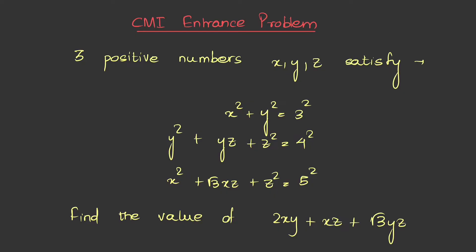This is the 2019 CMI entrance problem. We are given three positive numbers X, Y, and Z satisfying: X squared plus Y squared equals 3 squared; Y squared plus YZ plus Z squared equals 4 squared; and X squared plus root 3 times XZ plus Z squared equals 5 squared. We have been asked to find the value of 2XY plus XZ plus root 3 times YZ. At first glance there isn't anything obvious to guide us, but a careful inspection gives some useful hints.